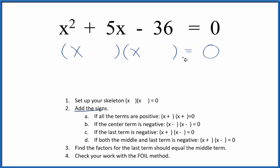We're going to add the signs to our skeleton equation. In this case, we have a positive and then a negative. So the last term is negative. I'm going to put a positive and negative in my skeleton equation like this here.